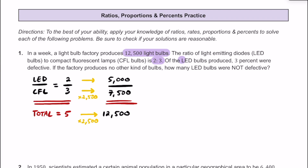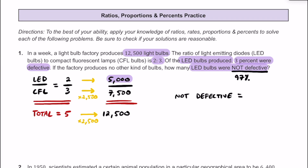We're told that of the LED light bulbs produced, which we now know is 5,000, that 3% of these light bulbs were going to be defective. So if the company does not produce any other kind of light bulbs, how many of the LED light bulbs were not defective? If 3% of the light bulbs were defective, then 97% are not defective. So that's going to be 97% of 5,000, which is 0.97 multiplied by 5,000, giving us 4,870 LED light bulbs that are not defective.